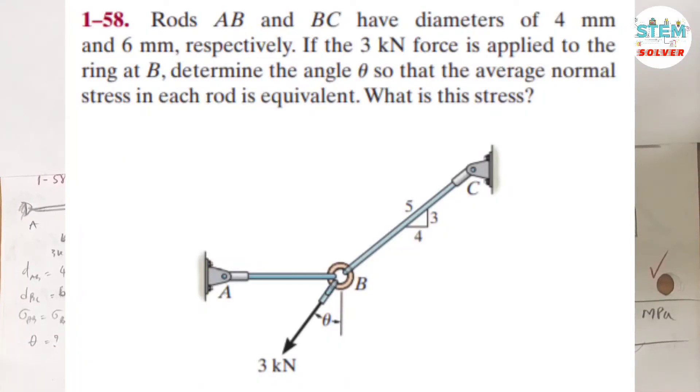Rods AB and BC have diameters of 4 mm and 6 mm respectively. If the 3 kN force is applied to the ring at B, determine the angle theta so that the average normal stress in each rod is equivalent. What is this stress?